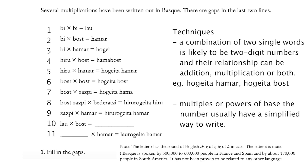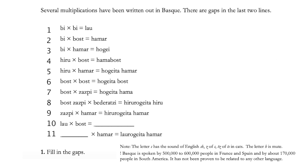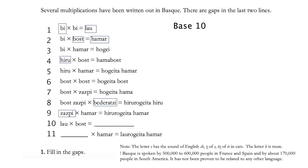Looking at this problem, we can first see that the results of equations 5, 6, and 7 all have the number root of 'hogei' and a combination of two words. Therefore we can infer that equations 5, 6, and 7's results are two-digit numbers, and that 'hogei' is probably a multiple of the base number. We can see many different single words like 'bi', 'bost', 'hamar', 'hiru', 'zazpi', etc. Therefore we can make an educated and logical guess that the language system is probably in base 10. 'Hogei' is probably either 10, 20, or 30. We can confirm this by counting the digit numbers in a second.